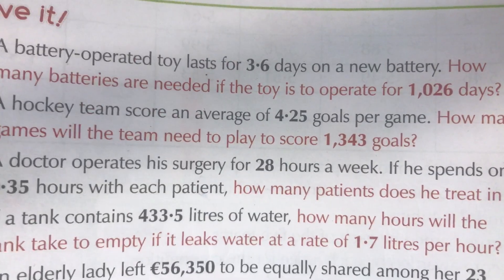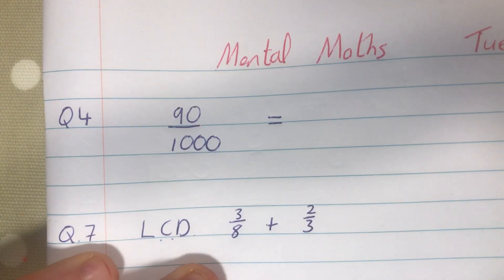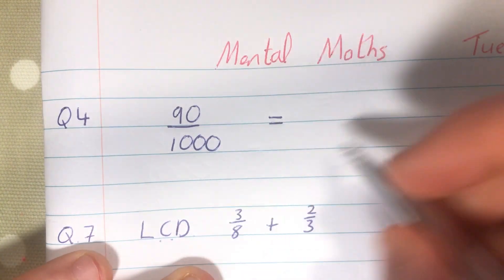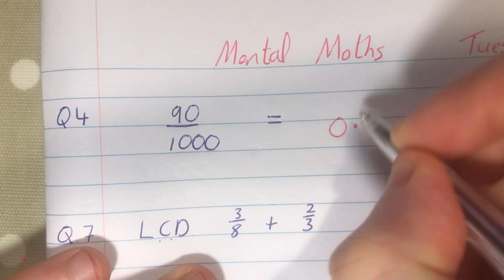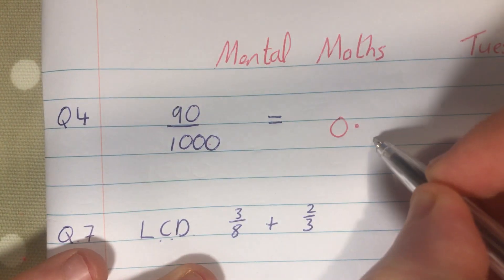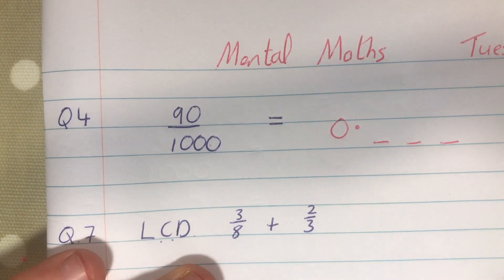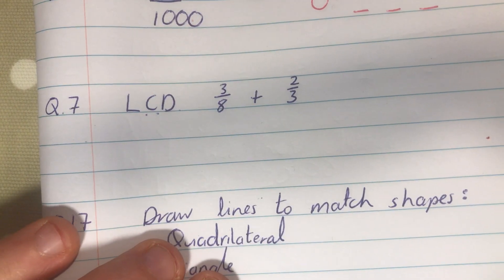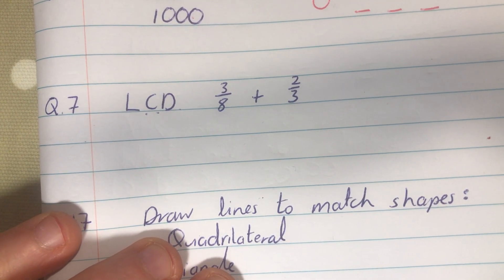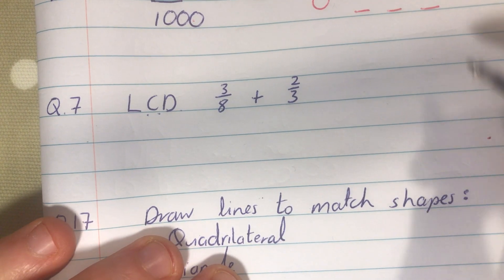Now, I had a quick glance at our mental maths today as well, and it should be largely grand, I think. So, 90 divided by a thousand, well, all I'll say here is they want it as a decimal. You have three zeros here, so you're going to have three numbers after the decimal here. Number seven, lowest common denominator of three-eighths and two-thirds.